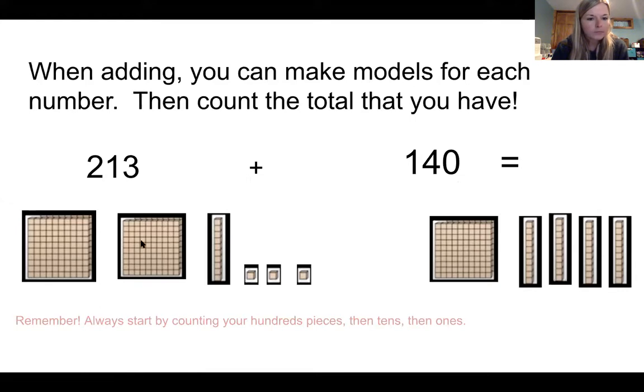100, 200, 300. So far, I have a three in my hundreds place because I have 300. I'm going to move over to my tens place. 10, 20, 30, 40, 50. I have five in that tens place. And last, I have three ones. Three in my ones place for my total of 353.